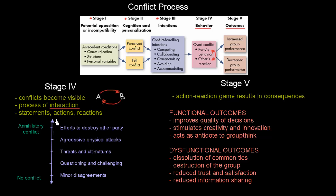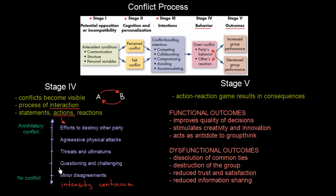This conflict in stage 4 exists on a sort of continuum — we can call it an intensity continuum — because it is about intensity. On one end, there can be basically no conflict, and on the other extreme, it can be annihilatory conflict. In the worst-case scenario, there are efforts to destroy the other party. Moving down in intensity, there are aggressive physical attacks, threats, and ultimatums. At low intensity, there is only questioning and challenging, and at the very end, only minor disagreements.